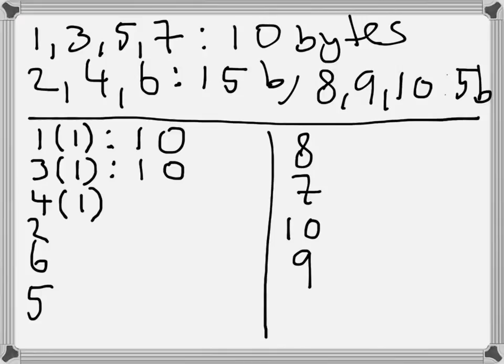The same goes when I receive number 4 — number 1 is still the last correctly received packet and I still send acknowledgement number 10. But when I receive packet number 2, I now have correctly received packets 1, 2, 3, and 4, so packet number 4 is my last correctly received packet, and I use acknowledgement number 50. That's because packets 1 and 3 are 10 bytes each, and packets 2 and 4 are 15 bytes each, totalling 50 bytes. Then I receive packet number 6, but I'm missing packet number 5, so it's still number 4 as the last correctly received and still acknowledgement number 50.